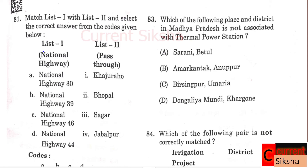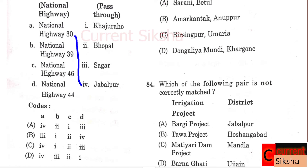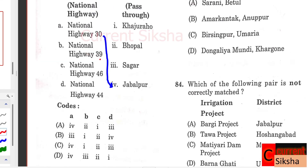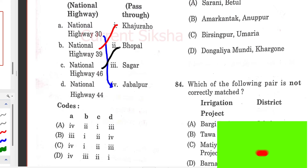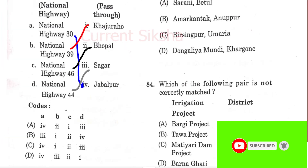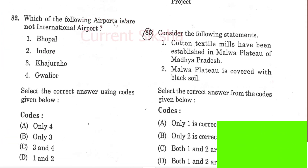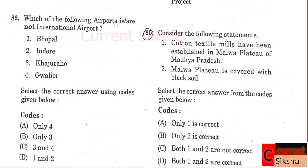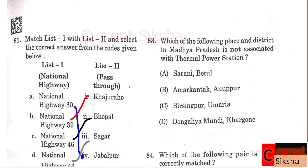Question 81: Match List 1 and List 2 - National Highway passes through. NH 30: Jabalpur; NH 39: Khajuraho; NH 46: Bhopal; NH 44: Sagar. Correct option C. Question 82: Which of the following airports are international airports? Correct option B - Option C: 3 and 4 - Khajuraho and Gwalior are international airports. Question 83: Which place and district in Madhya Pradesh is not associated with a Thermal Power Station? Correct option D - Drambalia Mundi, Khargaon. Question 84: Which of the following pair is not correctly matched - Irrigation Project or Districts? Correct option D - Barna Ghati Project, Ujjain - it is located in Rajgarh District in Madhya Pradesh.